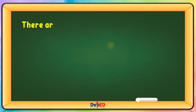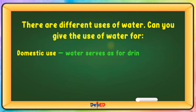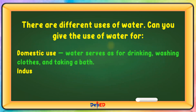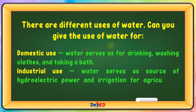There are different uses of water. Can you give the use of water for each? We have domestic use. Water serves for drinking, washing clothes, and taking a bath. For industrial use, water serves as a source of hydroelectric power and irrigation for agricultural lands.